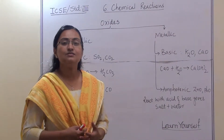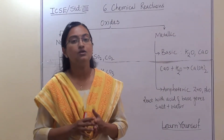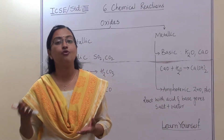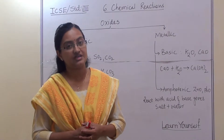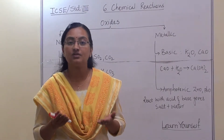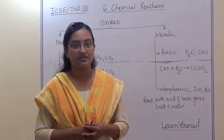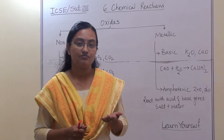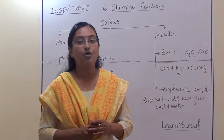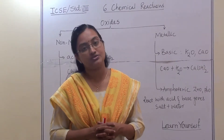Oxides. What is the meaning of oxide? When any metal or non-metal reacts with oxygen, they form their respective oxide. For example, potassium will react with oxygen and form potassium oxide. Any non-metal, for example carbon, will react with oxygen and form carbon dioxide. So these are known as oxides.